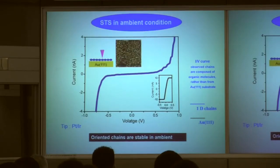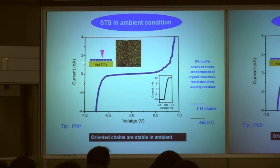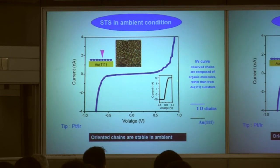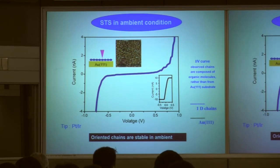This nanowire is very stable. We obtained this image in solution, and after removing the solution and exposing the structure to air, you can still find the nanowire exists. If you lower the STM tip to contact the nanowire and measure the I-V curve, you find it is a typical organic semiconductor curve. In contrast, measuring the bare surface gives a typical conductor curve.